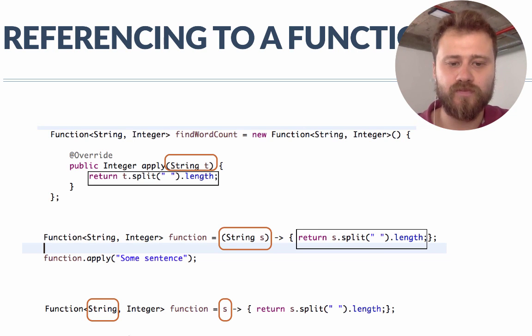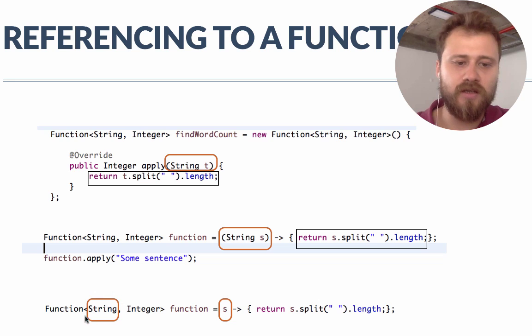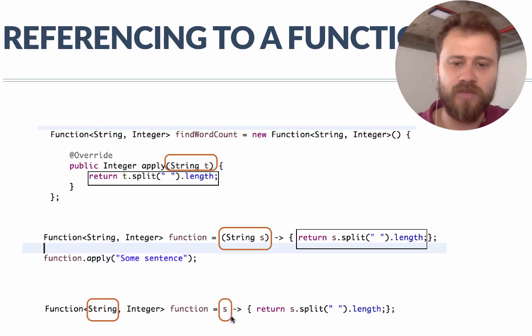You may remove the type definition inside the lambda because you already defined the input type in the functional interface reference — that's why you don't need to define the input type again.